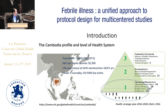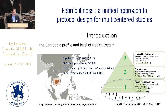Cambodia is one of the countries situated in the Asian region. It has borders with Thailand, Laos, and Vietnam. The population in 2013 is 40 million, with a GDP per capita of 2,300 USD. The life expectancy of women is 64 years and for men 61 years. The under-five mortality is 45 per thousand births.